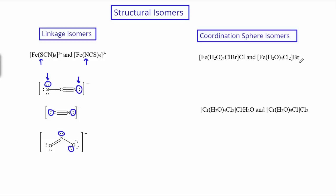Now looking at coordination sphere isomers: basically, what's inside the coordination sphere versus what's outside is going to differ. We show what's inside the coordination sphere with brackets. In one example, we have four water molecules, a chloride ligand, and a bromo ligand all inside the coordination sphere, with one chloride counter ion outside. In its corresponding coordination sphere isomer, we still have four waters, but two chloro ligands inside and a bromide as the counter ion.